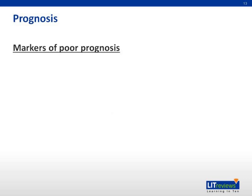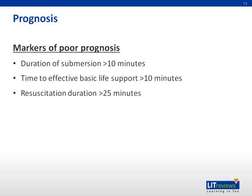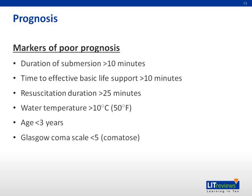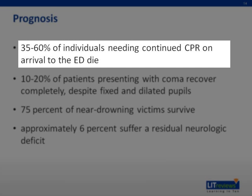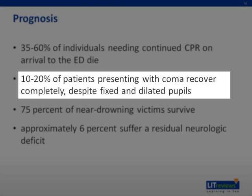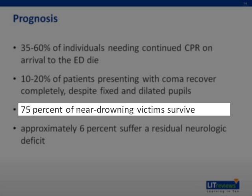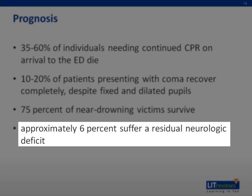What is the prognosis of these patients? These are the markers of poor prognosis: duration of submersion more than 10 minutes, time to effective basic life support more than 10 minutes, resuscitation more than 25 minutes, water temperature more than 10 degrees Celsius, pH less than 3 degrees, GCS less than 5, persistent apnea requiring CPR in the emergency department, and ABG pH less than 7.1. 30 to 60% of individuals who need continuous CPR on arrival to the ED will unfortunately die. However, 10 to 20% of patients who present with fixed and dilated pupils can recover. Overall, 75% of near-drowning victims survive, and approximately 6% will suffer a residual neurological deficit.